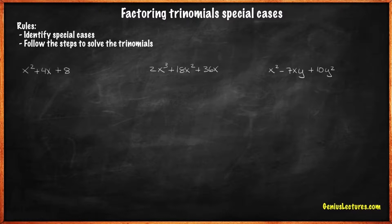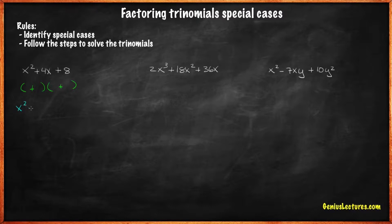For example, x squared plus 4x plus 8. When all the trinomial signs are positive, we use positive signs inside the parentheses. To find the first term in our answer, we look at the first term in our trinomial. x squared is the first term, and x squared factors are x times x, so we write this as part of our answer.